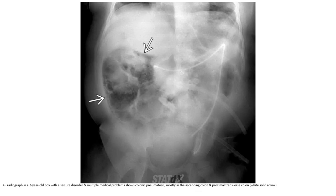AP radiograph in a two-year-old boy with a seizure disorder and multiple medical problems shows colonic pneumatosis, mostly in the ascending colon and proximal transverse colon.